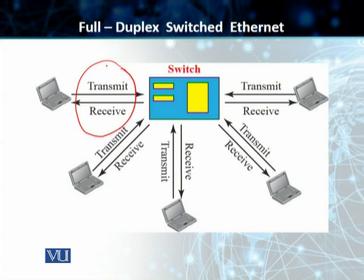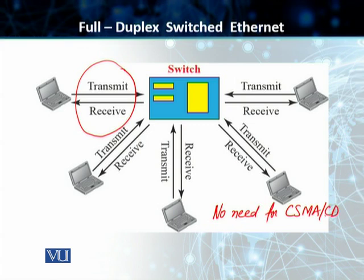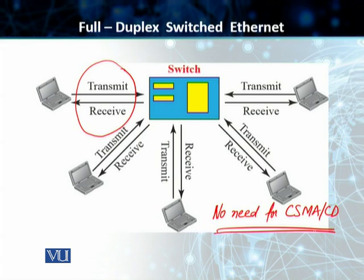This full duplex mode increased our capacity directly from 10 to 20 megabits per second. Instead of using one link between the station and switch, we only had to use two links — one to transmit and one to receive. The biggest advantage of full duplex switched Ethernet was that there was no need for CSMA/CD. Each station is connected to the switch via two separate links, and each station can send and receive independently because each link is a point-to-point dedicated link between the station and the switch.